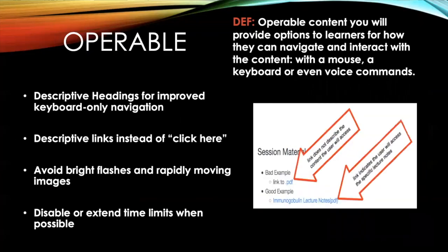Operable content will provide options to learners for how they can navigate and interact with the content — with a mouse, keyboard, or even voice commands. For example, learners with visual impairments may not be able to use a mouse to select options on the screen, but they can use keyboard shortcuts or touch gestures to navigate the content by heading or link. Others, such as programmers and power users, may just prefer the keyboard because they are able to navigate faster with it.